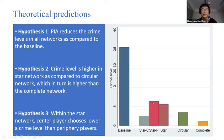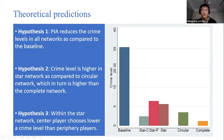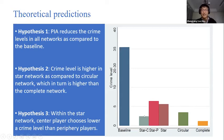Intuitively, in our setup each link represents a piece of insider information that can be used against a player in the second stage. Therefore, the more links a player has, the less crime that player should commit. The complete network has more links than circular and star, so it should have a lower crime level. Also, star fringe players have fewer links than the center, so fringe players should produce more crime than the star center.